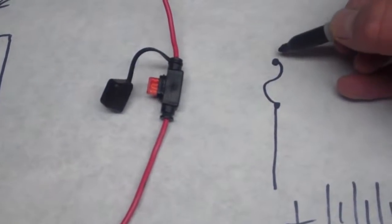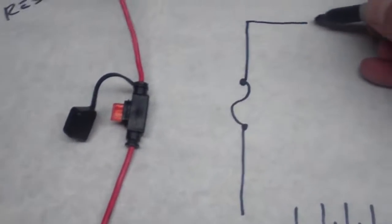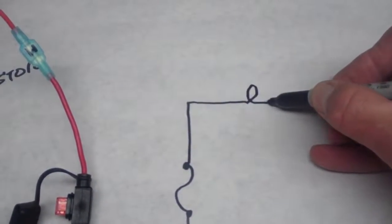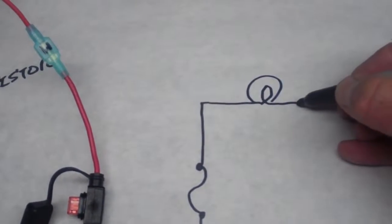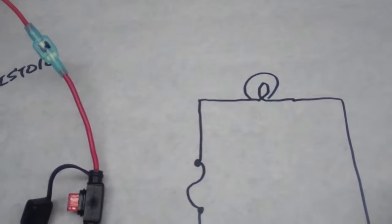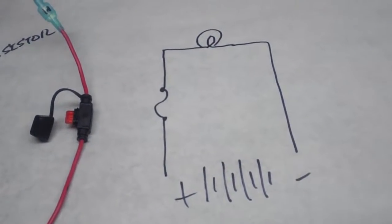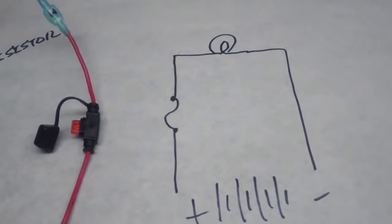That's the symbol for a fuse. There's my bulb and here's my return path. Okay, so there's my circuit right there.